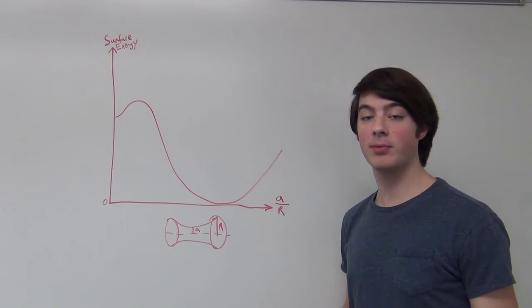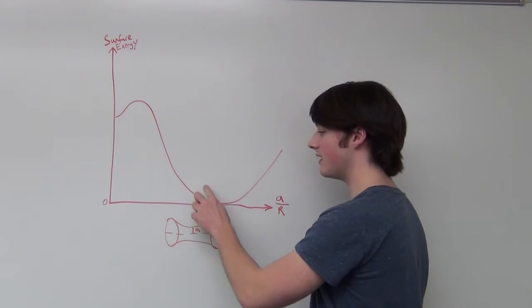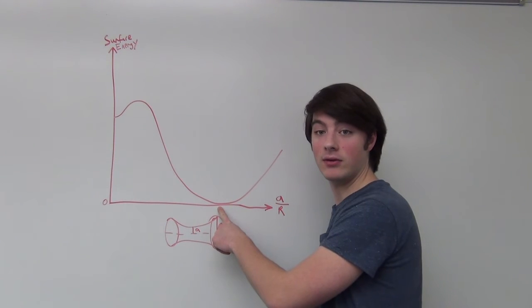We can make sense of this result by graphing the surface energy of the bubble against the neck radius. For a small separation length, the graph looks approximately like this.